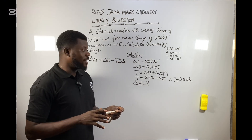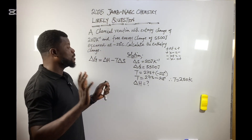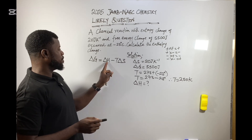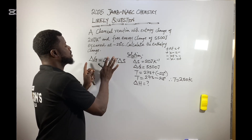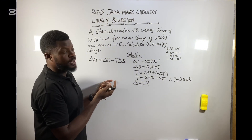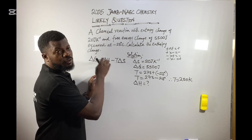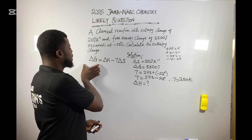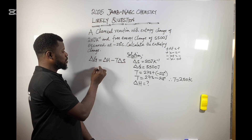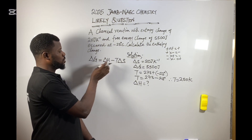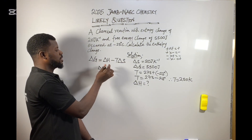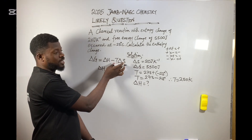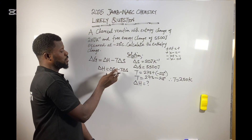Now I'll fix the formula to solve for delta H. Rearranging: if you bring delta G to one side and cross-multiply with the negative sign, delta H remains equal to delta G plus T times delta S. You can rearrange it this way and you'll get the same answer.